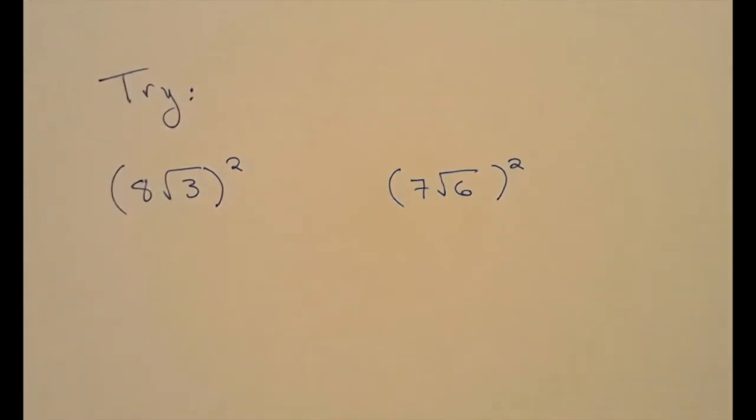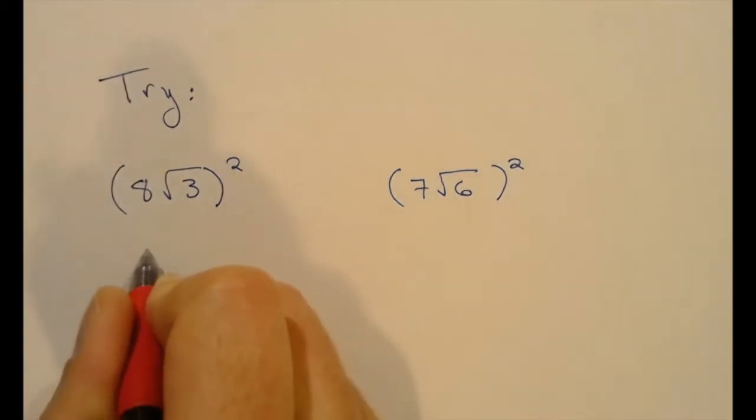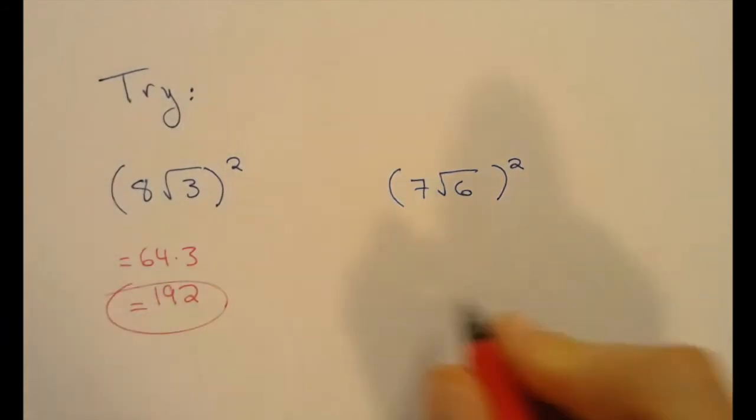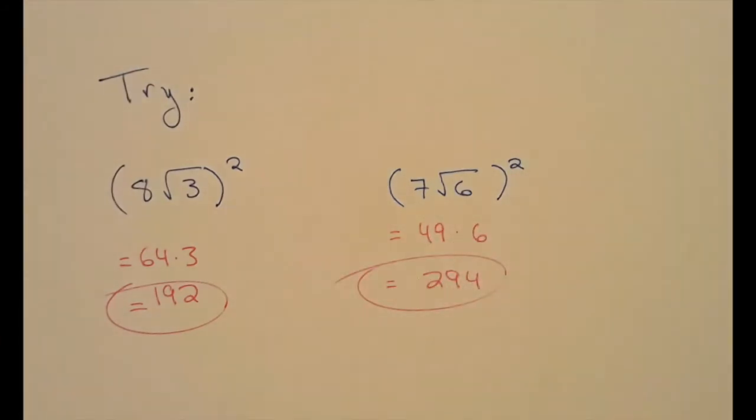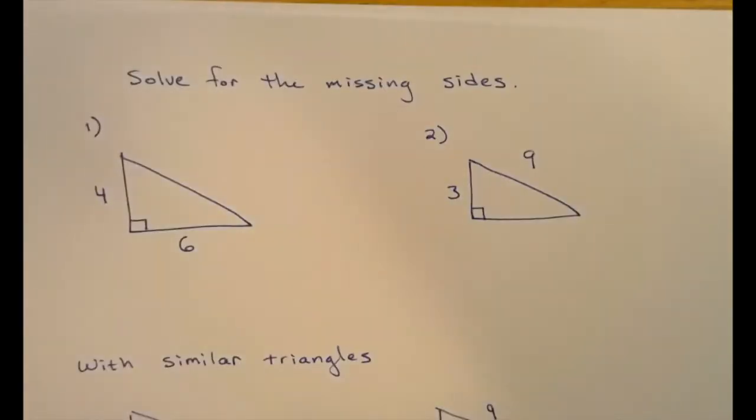When you multiply a radical by itself, you just get the whole number. So this is a result that's going to end up popping up a couple of times. Let's try a couple examples real quick before we move on to Pythagorean theorems and Pythagorean triples.